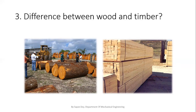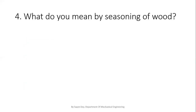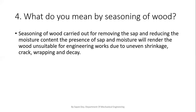My next question is: what do you mean by seasoning of wood? Seasoning of wood is carried out to remove the sap and reduce the moisture content, as the presence of sap and moisture renders the wood unstable for engineering work. When we cut trees to get wood, there is a lot of moisture content. With that moisture, we see unevenness such as shrinkages, cracks, warping, and decay. We also see bending. In engineering work, we cannot tolerate this unevenness or bending, so we must season our wood before engineering work.